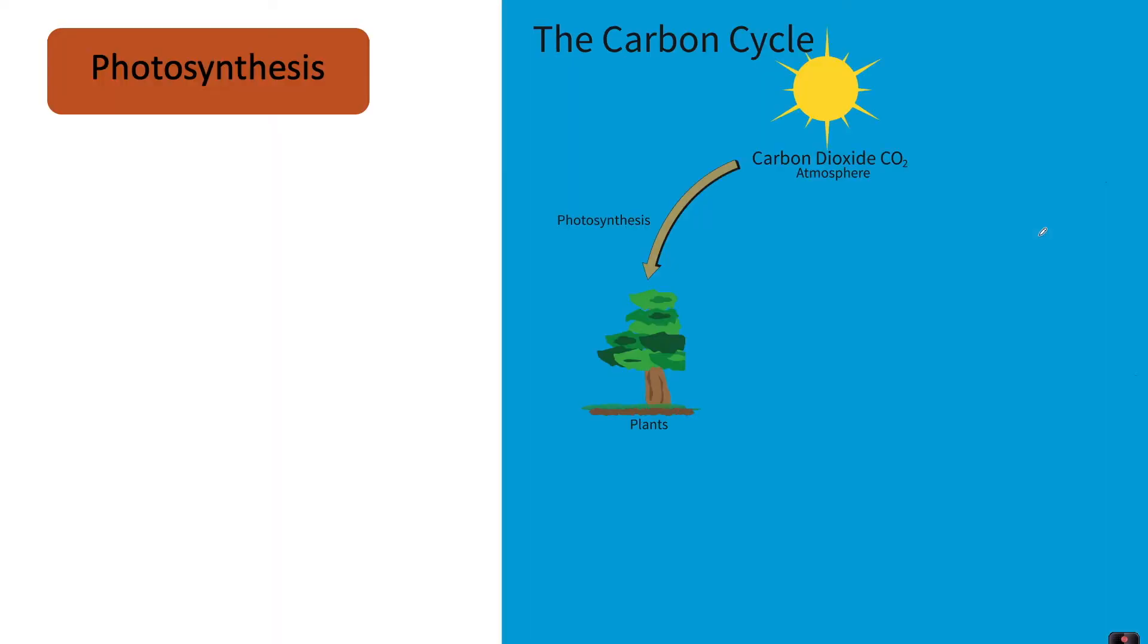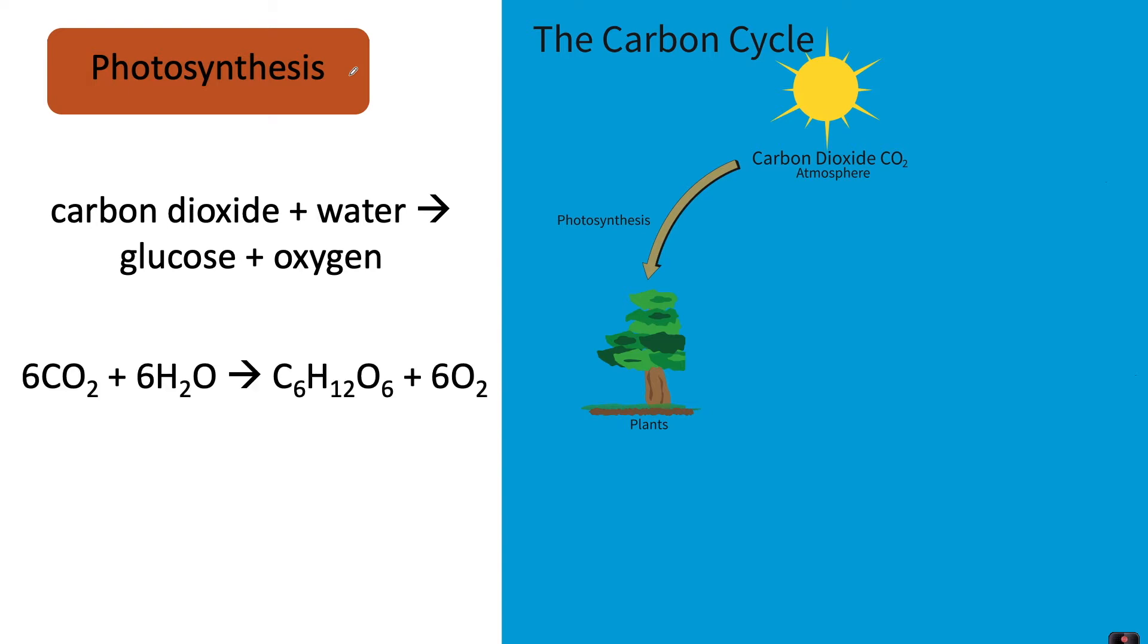Let's start by looking at photosynthesis. The equation for photosynthesis is carbon dioxide plus water makes glucose plus oxygen. If we write this as a symbol equation, it's easier to see what's happening to the carbon. We can see carbon in carbon dioxide in the atmosphere, and also carbon on the other side of the equation as part of glucose.